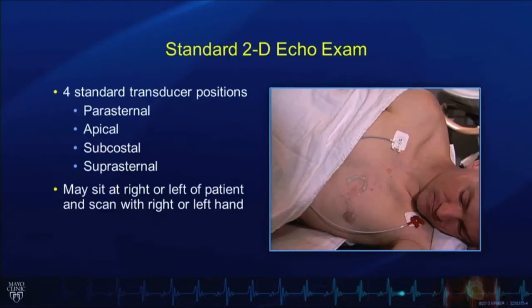There are really four standard transducer positions that we use in transthoracic echocardiography: the parasternal, the apical, subcostal, and suprasternal.